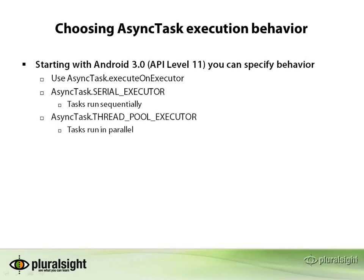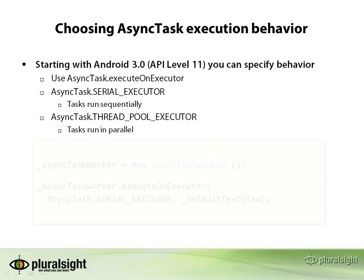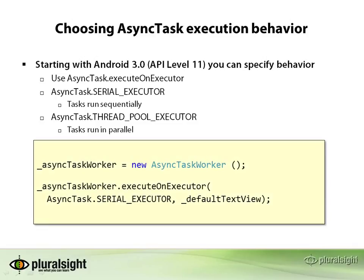Now if you just call execute, the behavior is dictated by the operating system version — whether tasks run serially or in parallel. But if you use a different method, executeOnExecutor, you can actually specify what behavior you want. If you want them to run sequentially, you pass in the serial executor. If you want them to run in parallel, there is a thread pool executor. All your class implementation stays exactly the same. The only thing that changes is that after you create your AsyncTask instance, you call executeOnExecutor, and that first parameter specifies the exact behavior you're looking for.